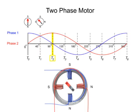At time 2, phase 1 reaches zero current flow, while phase 2 reaches maximum current flow. This causes the rotor to turn 45 degrees counterclockwise to align itself with the horizontal poles.